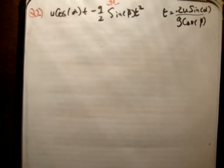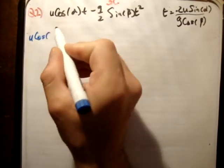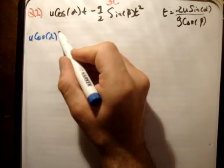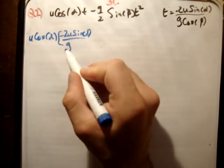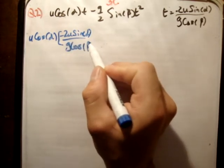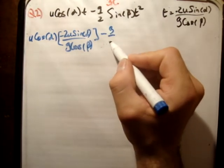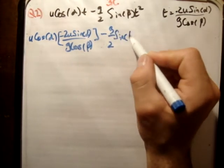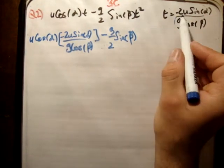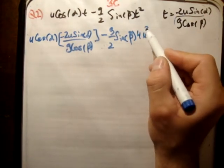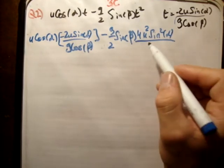Plugging in the value for t: we get u cos alpha times (minus 2u sin alpha over g cos beta), minus (g/2) sin beta times t squared, which gives 4u² sin² alpha over g cos² beta.